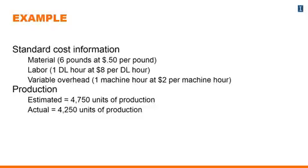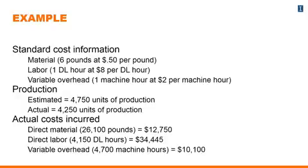In terms of production, at the beginning of the period we estimated we would produce 4,750 units, but at the end of the period we only produced 4,250. Actual costs incurred: direct material totaled $12,750 using 26,100 pounds; direct labor totaled $34,445 using 4,150 direct labor hours; and variable overhead was $10,100 using 4,700 machine hours.